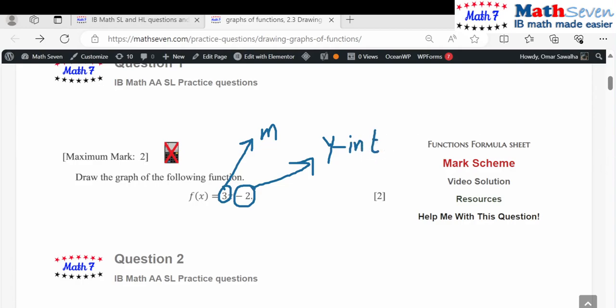In order to graph this, simply draw the x-axis and y-axis like this. Now locate the y-intercept. You have minus one and minus two - this is the y-intercept.